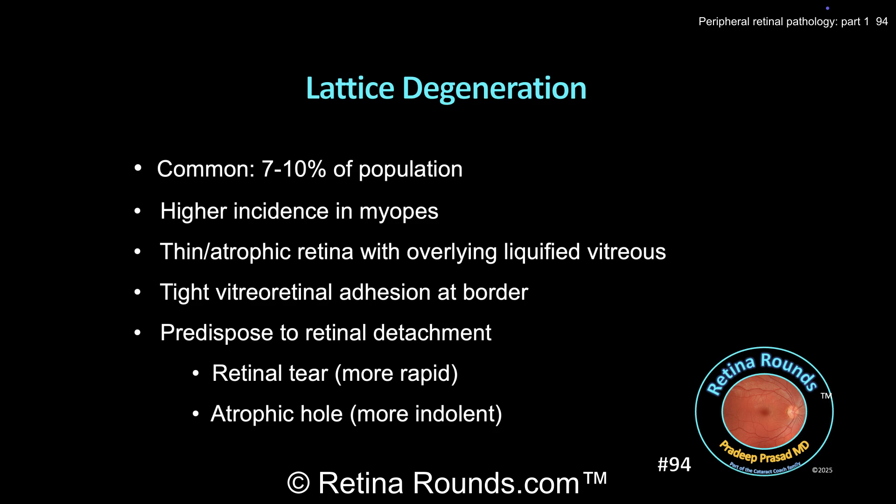These lesions can predispose to retinal detachments, either secondary to a retinal tear or an atrophic retinal hole. Retinal tears usually occur at the edge of lattice, where vitreo-retinal traction is greatest and can progress more rapidly to retinal detachment. Atrophic holes, on the other hand, can be present anywhere within the bed of lattice, and detachments from these lesions typically progress more slowly.